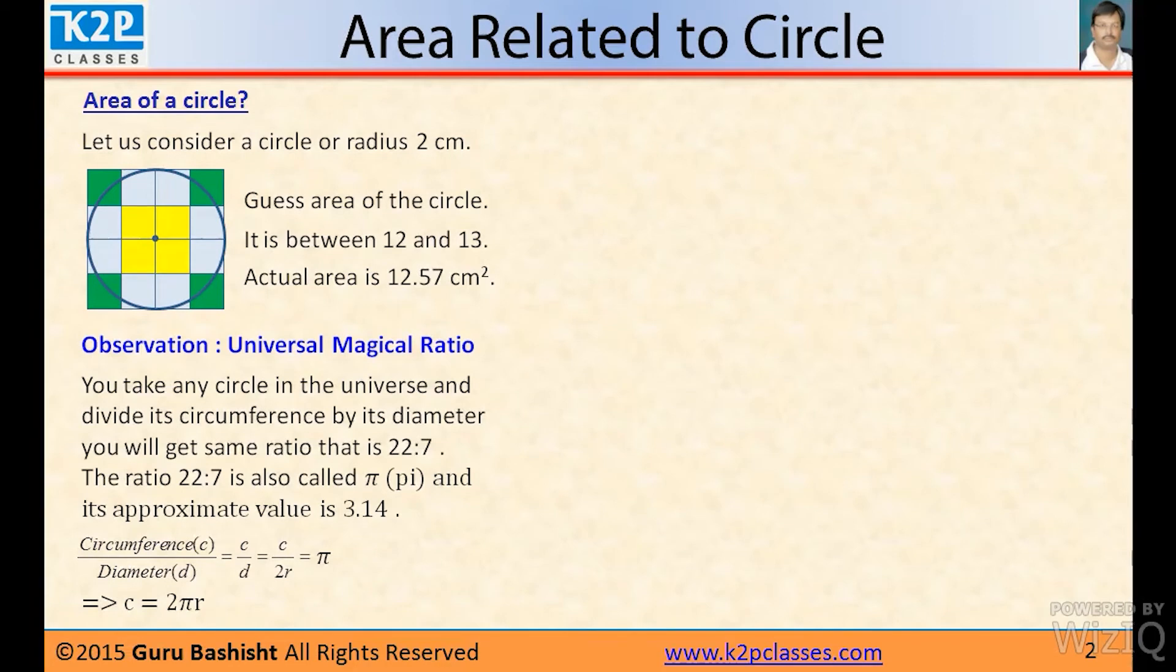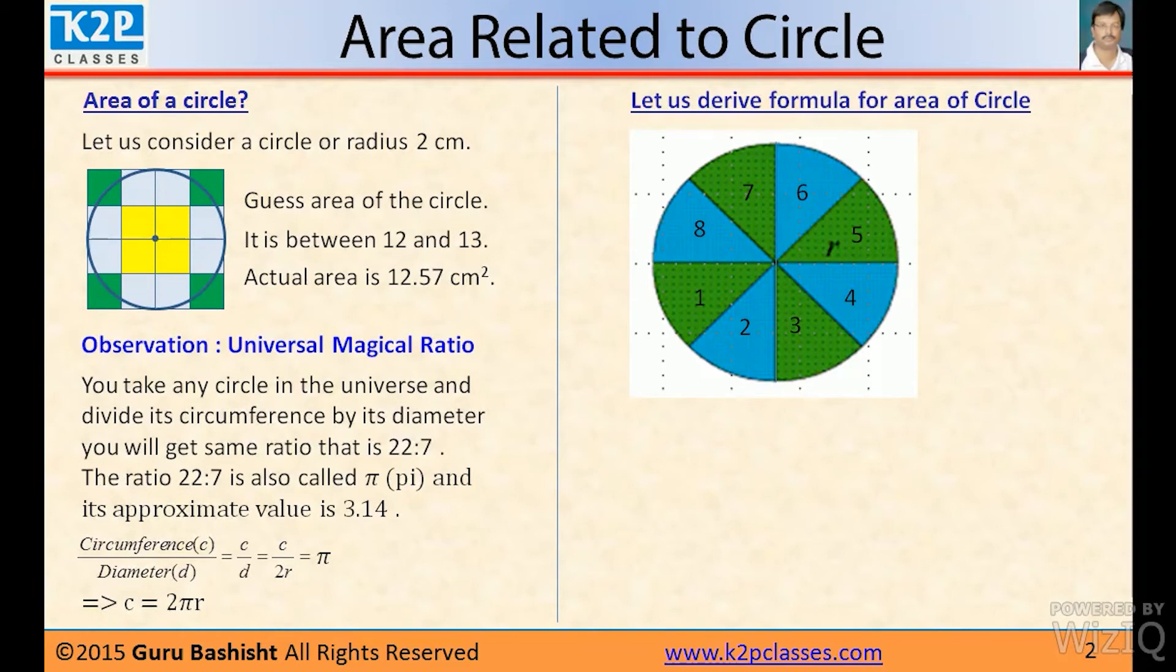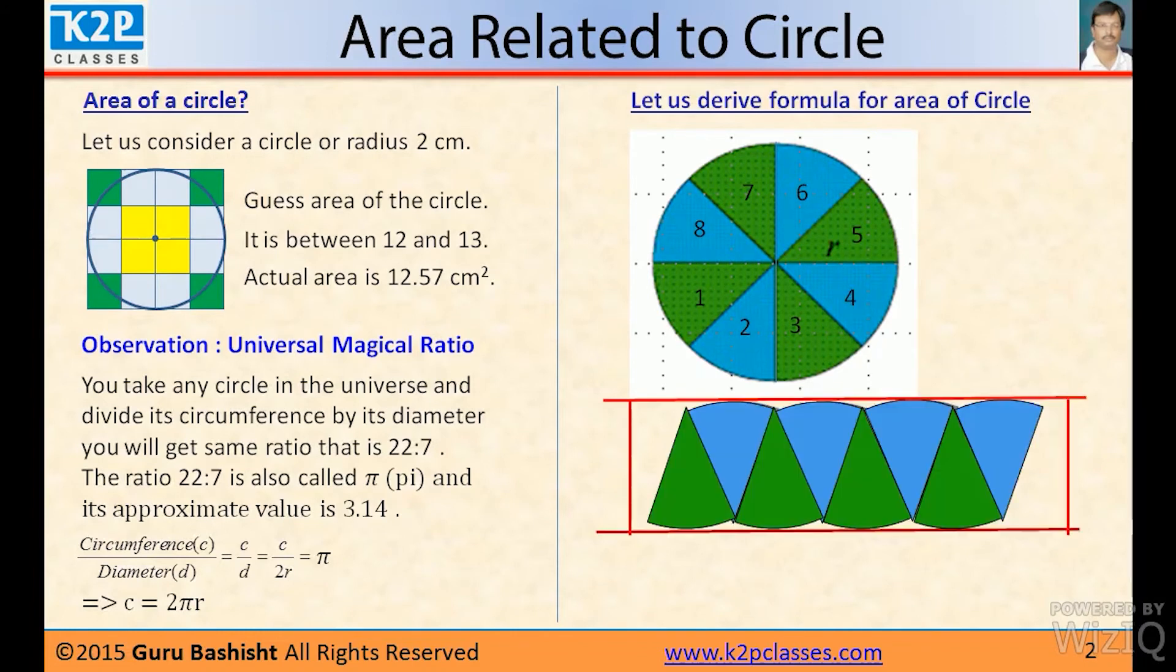That means circumference of any circle equals 2π times its radius. Let us derive the formula for area of circle. Let us consider a circle of radius r. Let us divide the circle into 8 equal parts: 1, 2, 3, 4, 5, 6, 7, 8.